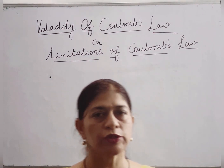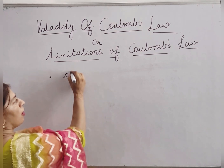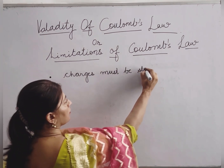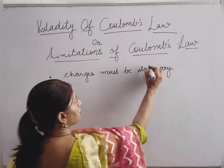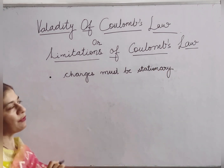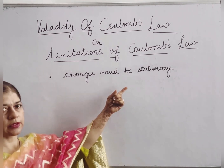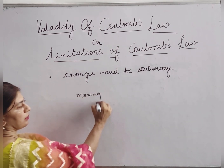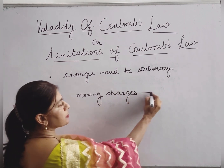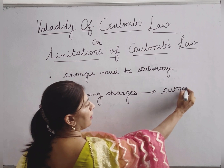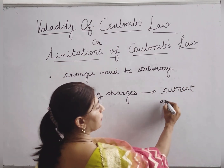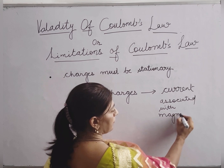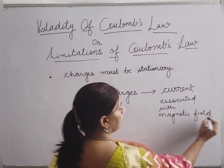The next point of validity of Coulomb's law is that the charges must be at rest — they must be stationary. Only then can we apply Coulomb's law. The reason is that if the charges are moving, they constitute a current, and current is always associated with a magnetic effect and force.